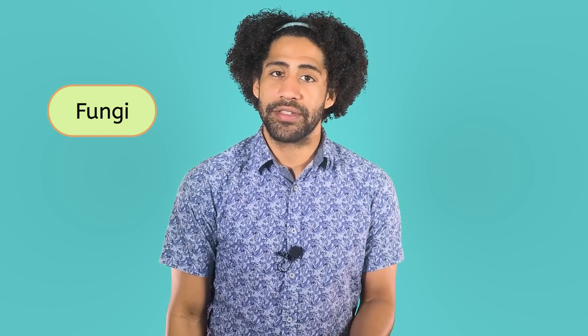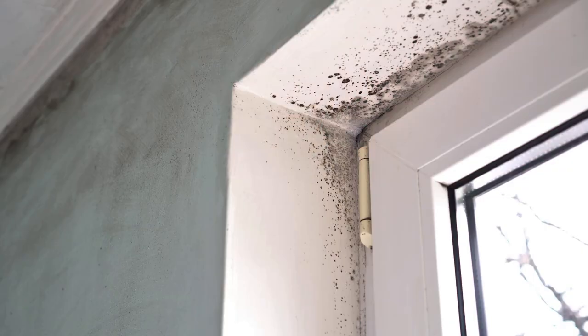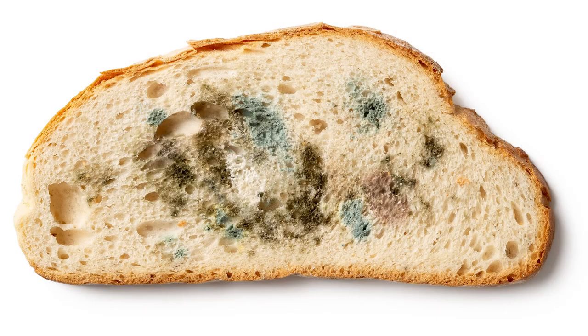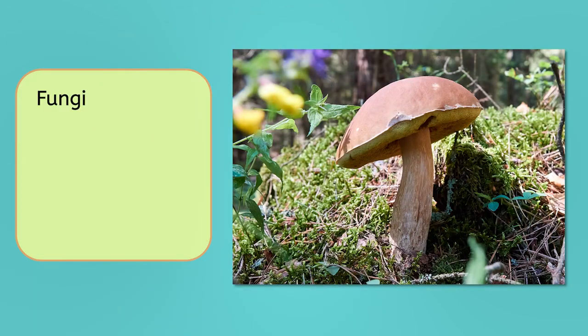Fungi get a bad rap because they're often associated with molds and spoiled food. However, fungi are incredibly diverse and include millions of different species outside of the ones growing in your spoiled leftovers. So, what exactly is a fungus, and how do scientists identify them?